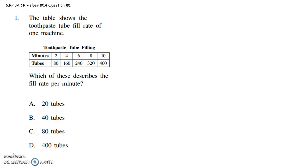Which of these describes the fill rate per minute? Fill rate per minute. I know they're looking for a unit rate. Unit rate means per one minute. When they say rate per minute, what they're really asking you is how many tubes can be filled each minute? So that's what this question means.